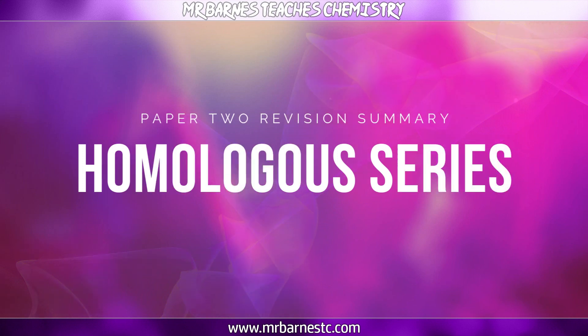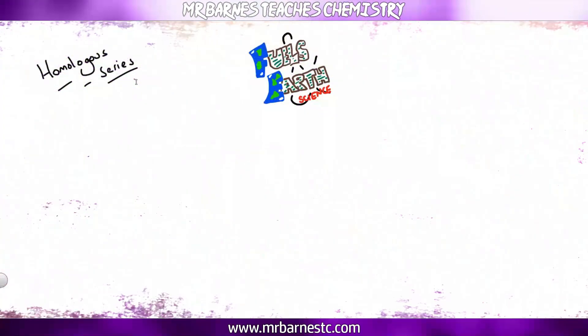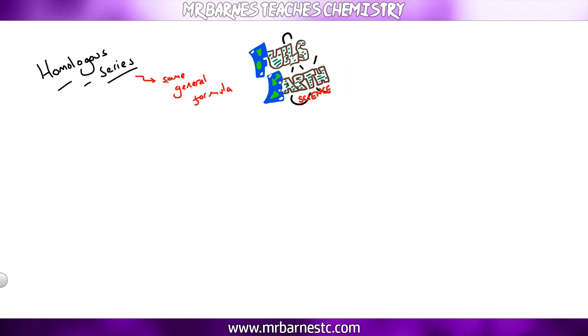This next section is going to have a look at what the term homologous series is. And there are four things you need to know about what a homologous series is. The key thing being they have the same general formula. They also differ by a CH2 molecule as you go up. There's a gradual variation in physical properties and they have similar chemical properties.